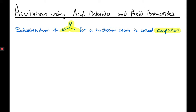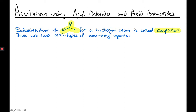In this particular unit, we're going to use two types of compounds to achieve acylation. There are going to be two main types of acylating agents: acyl chlorides and acid anhydrides. So let's have a look at acyl chlorides first.